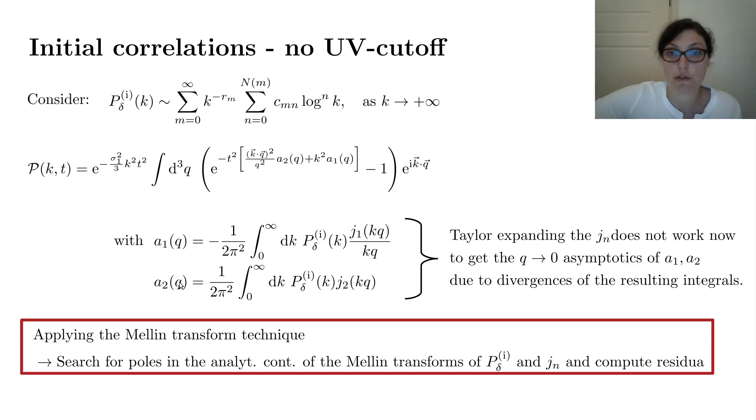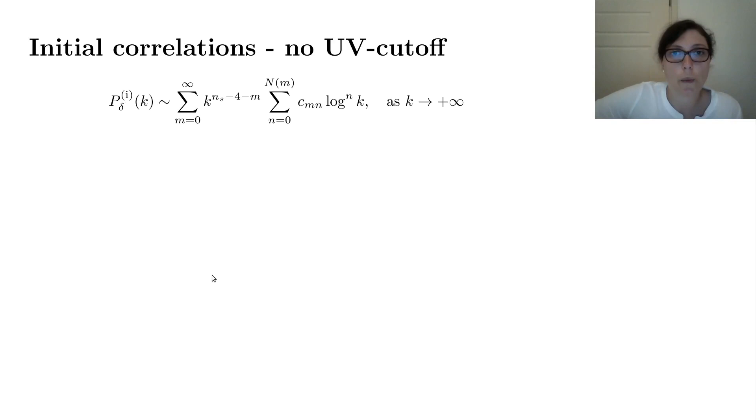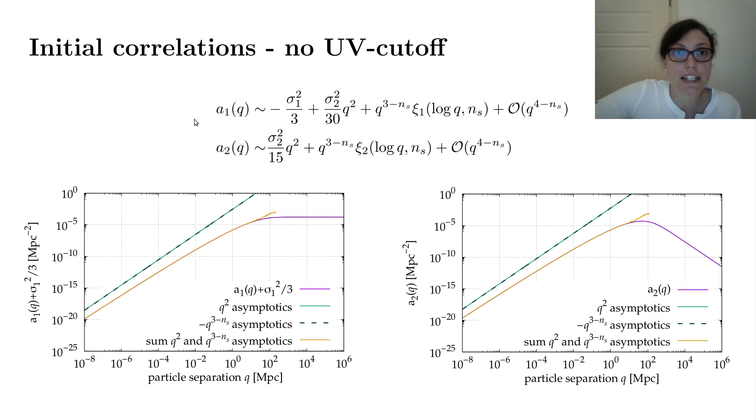Applying this Mellin transform technique leads to these double sums. The asymptotics is now given by a sum that contains even powers in q and a sum that contains fractional powers in q. When we look at a cosmological reasonable case, then we know that the initial power spectrum typically falls off like k^(ns-4) and potentially some log terms. When we apply the Mellin transform technique, the first terms of a₁(q) and a₂(q) now looks like this: we have σ₁²/3, so a constant, we have a quadratic term, and then we have a term that goes like q^(3-ns). Since ns is approximately equal to 1, we get another term here that is also approximately quadratic in q.